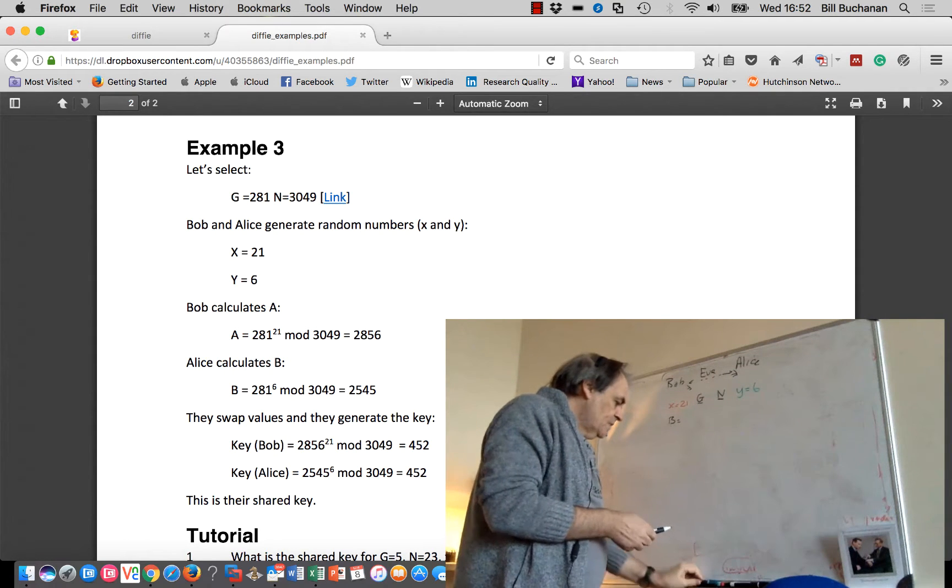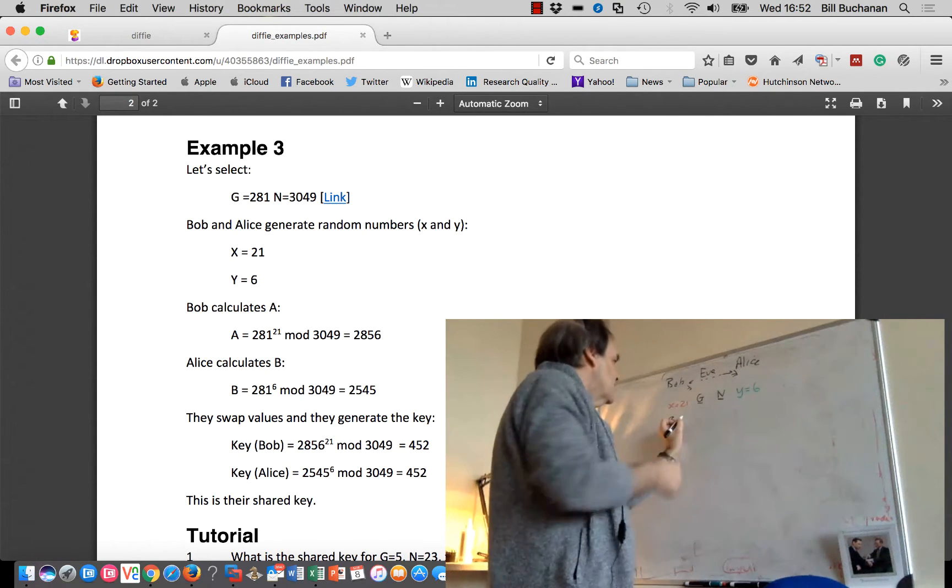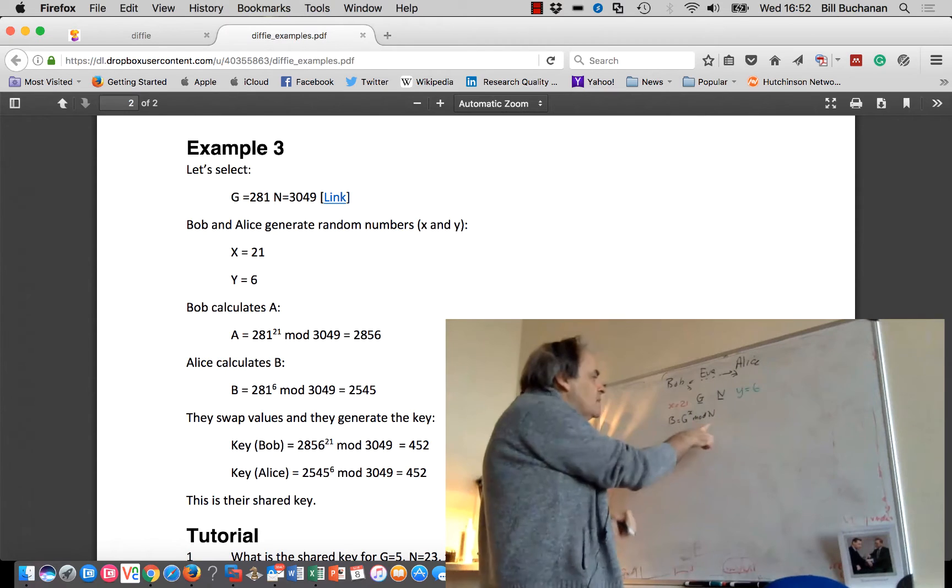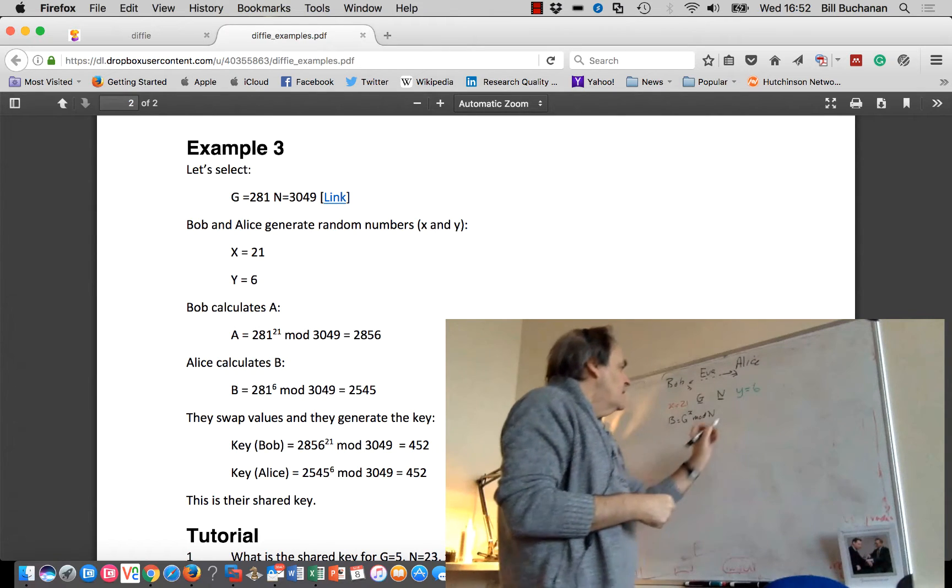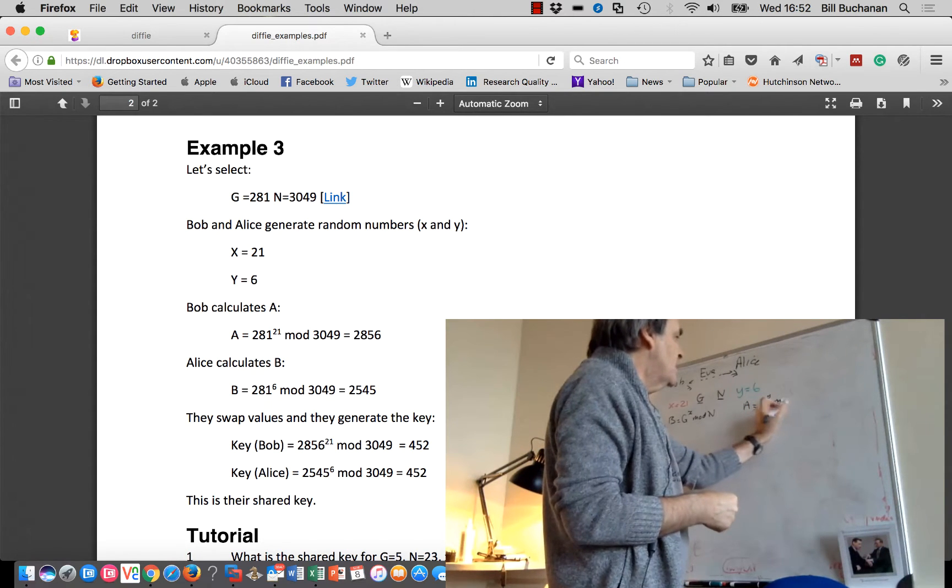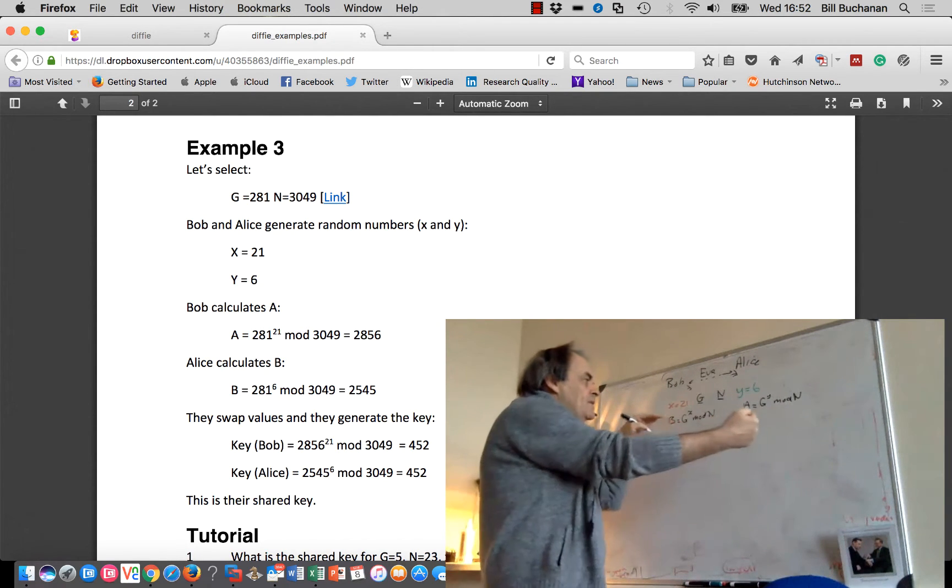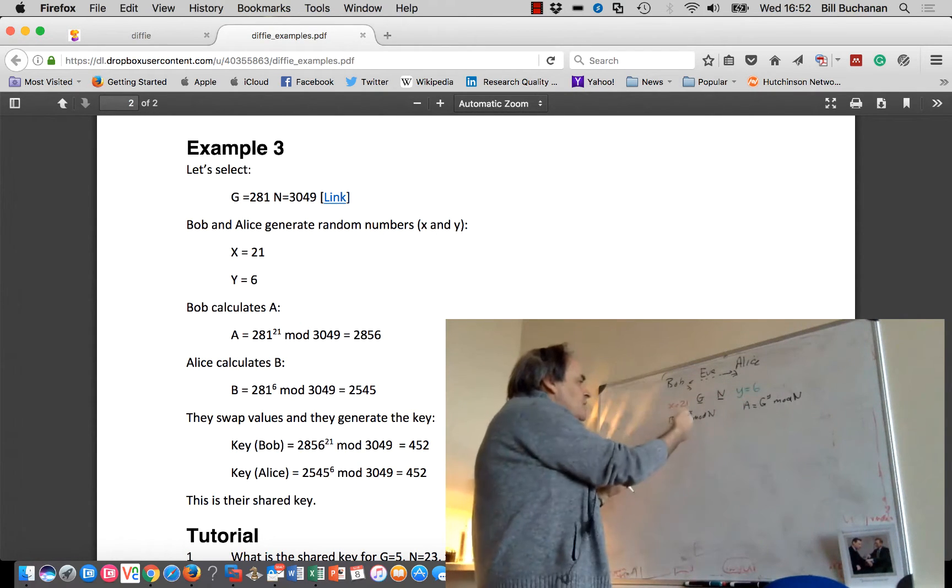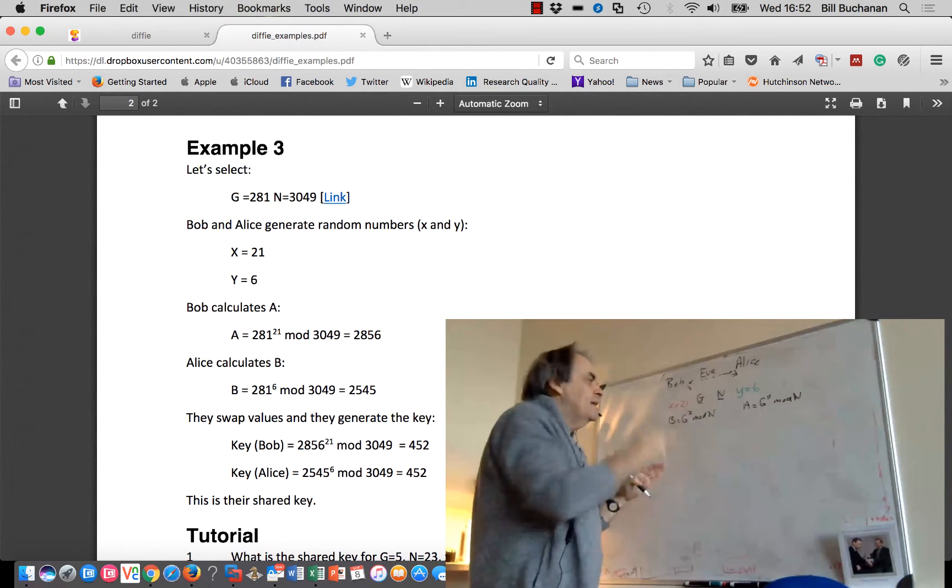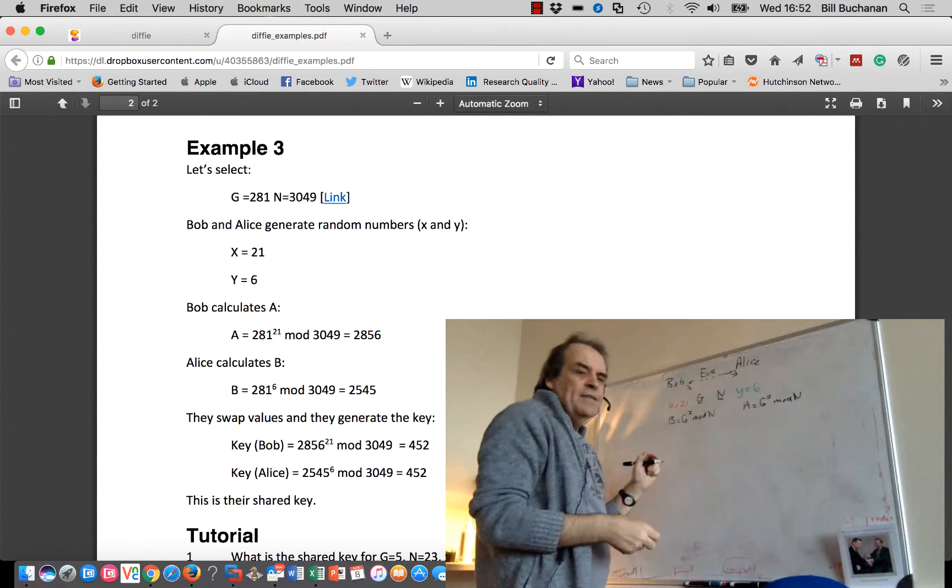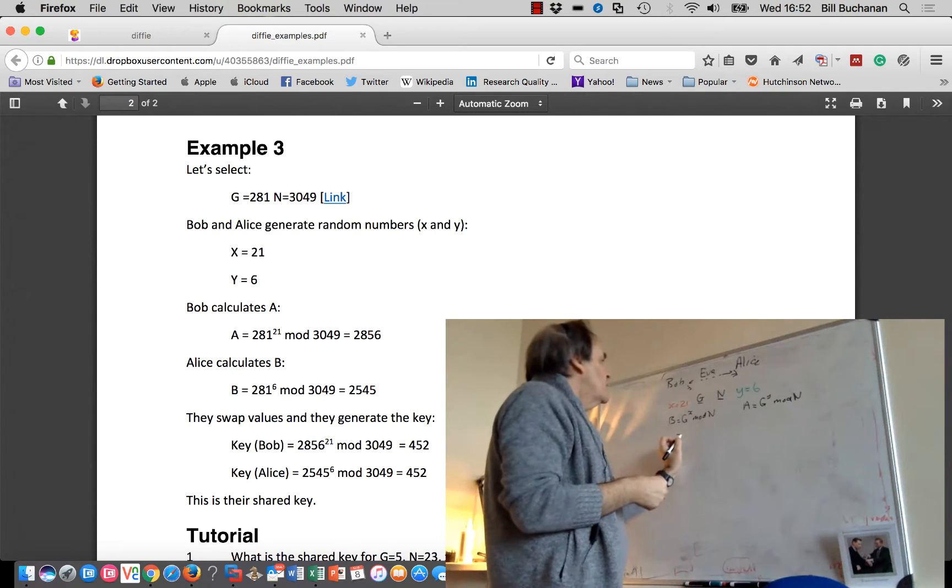So Bob initially calculates G to the power of X mod N. So remember, mod N is the remainder of a division between this value and N. And Alice will calculate G to the power of Y mod N. And what happens is that they exchange values, and then the value that Bob gets from Alice, he'll raise to the power of X and take mod N. And she'll take the value she gets from Bob, raise it to the power of Y and do mod N.